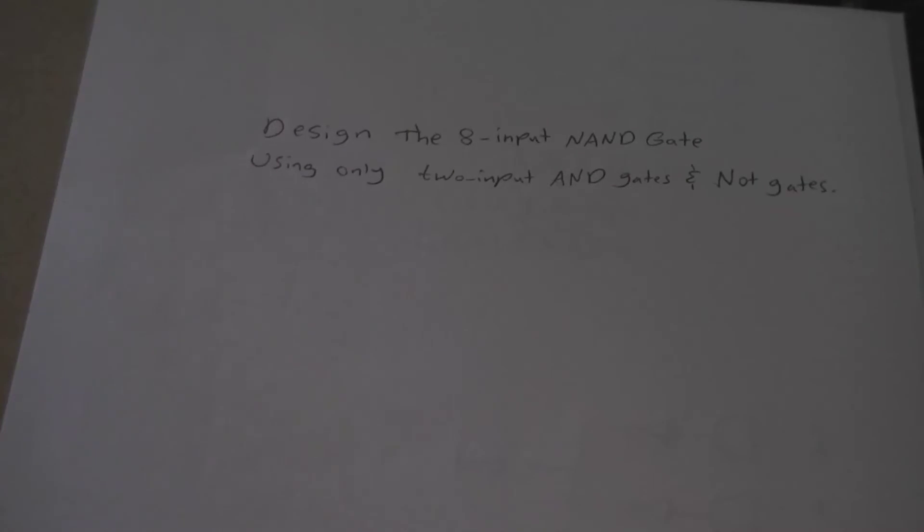Let's look at what we want. We want this NAND gate with inputs A through H, and the output should be the multiplication of all the inputs inverted, so A through H inverted.